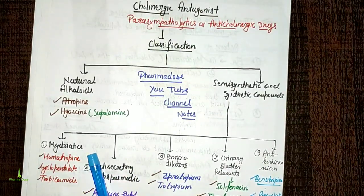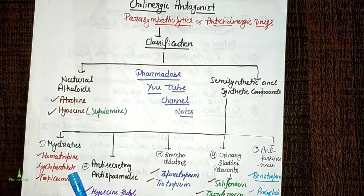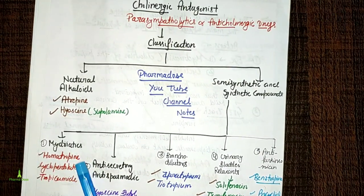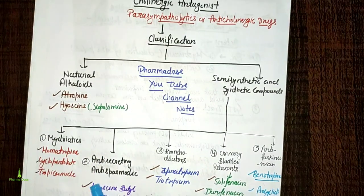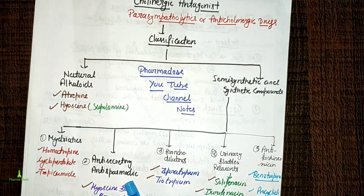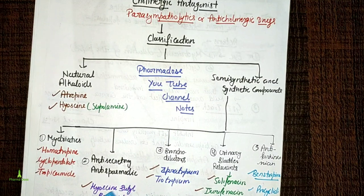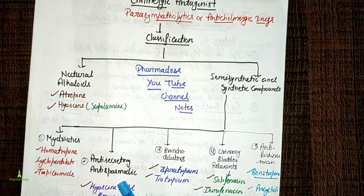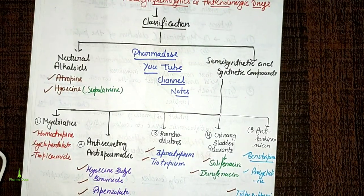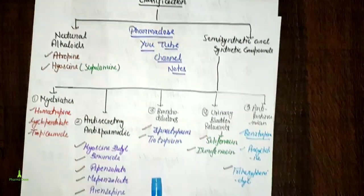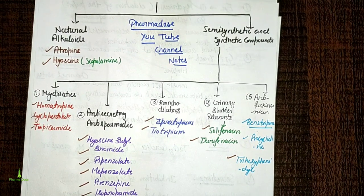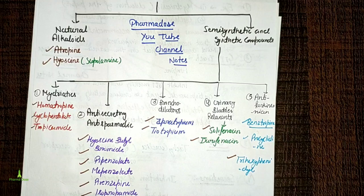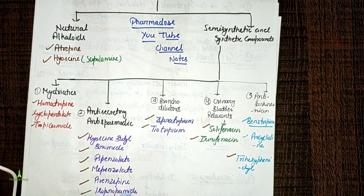The first category is mydriatics: homatropine, cyclopentolate, tropicamide — these drugs are used as mydriatic agents. Next are anti-secretory and anti-spasmodic drugs, for example: hyoscine butylbromide, pipenzolate, mepenzolate, prifinium, isopropamide, and dicyclomine.